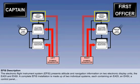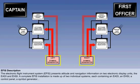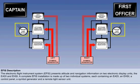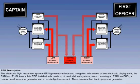Additionally, there is a control panel, a symbol generator, and a remote light sensor unit, which responds to ambient light conditions on the flight deck to automatically adjust the brightness of the screen display. In addition, a third backup symbol generator is incorporated, in case a system symbol generator should fail.